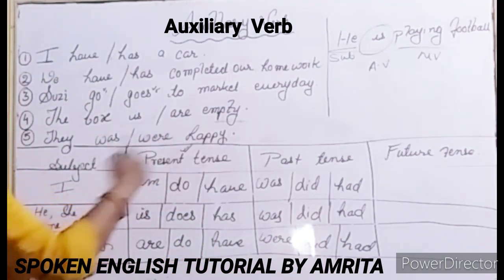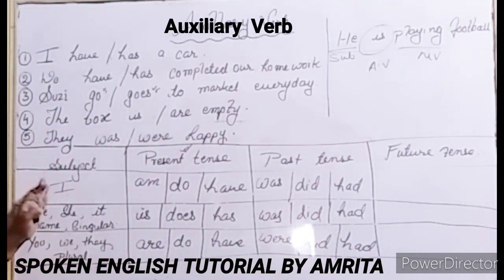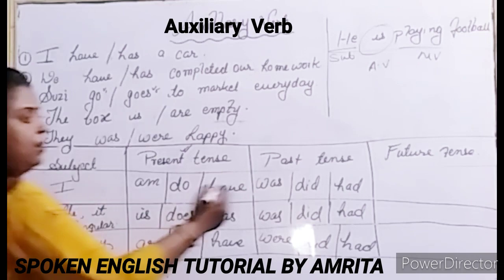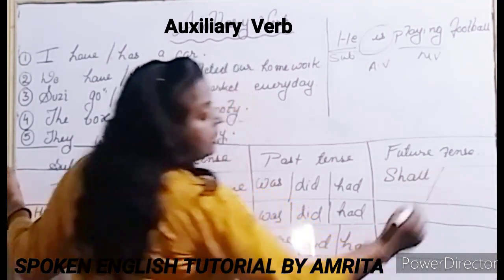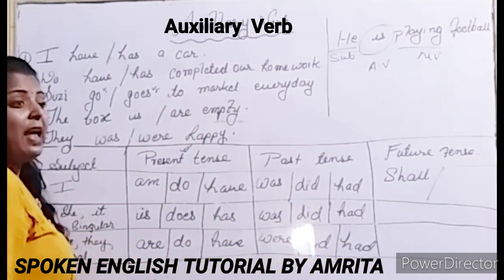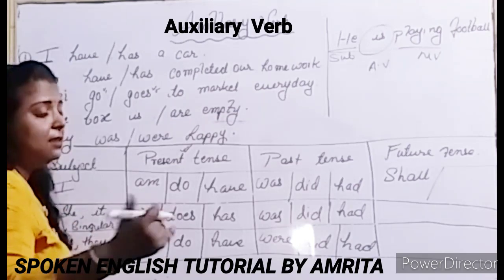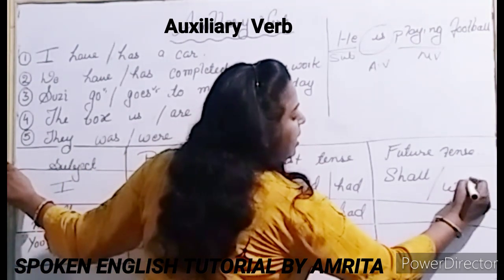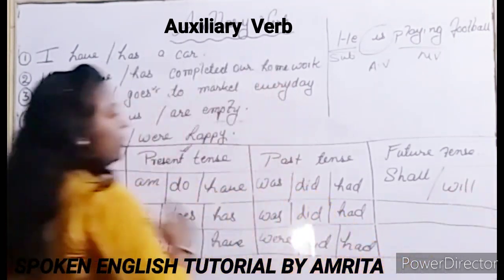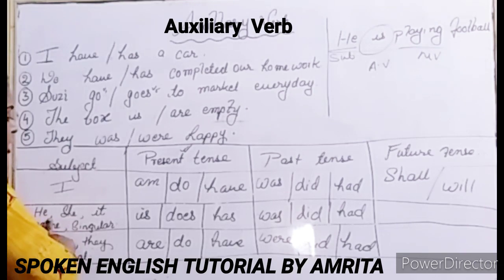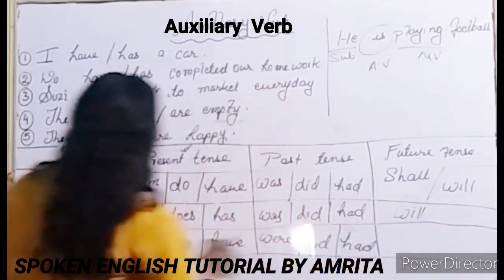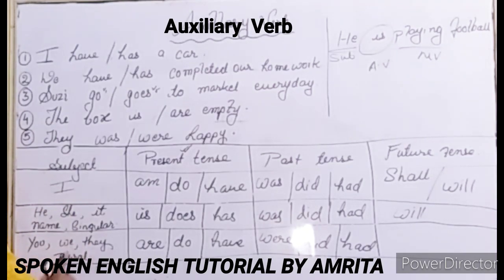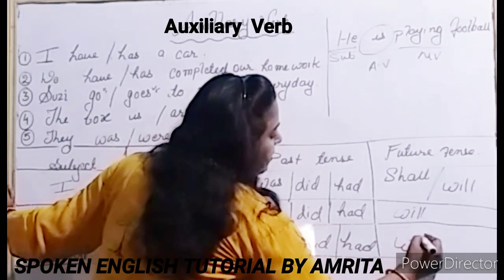Now let's come to the future tense. For future tense with 'I,' we use 'shall.' But in modern grammar, we also use 'will' with 'I.' With he, she, it, name, singular, we always use 'will.' And with you, we, they, plural, we also use 'will.'